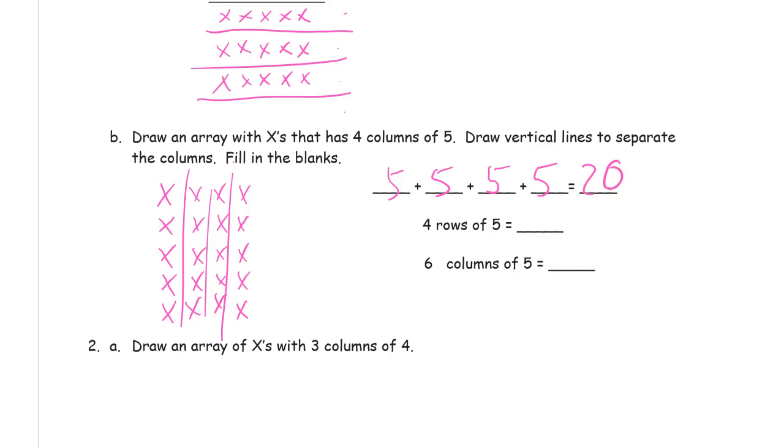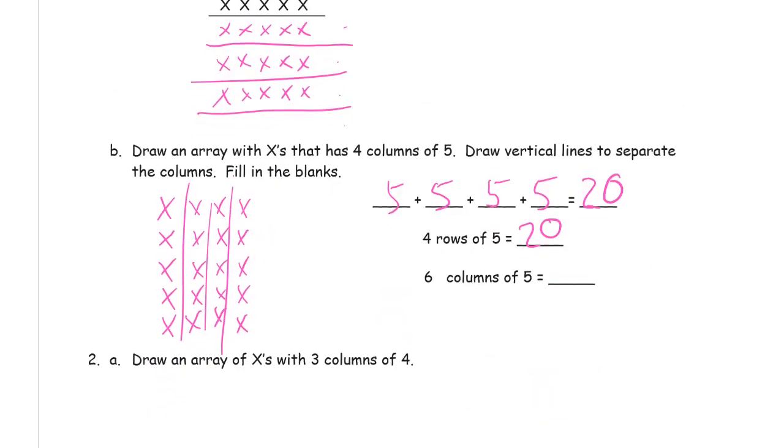There's twenty X's. Four rows of five is twenty. That's what we drew on part A. And then six columns of five.